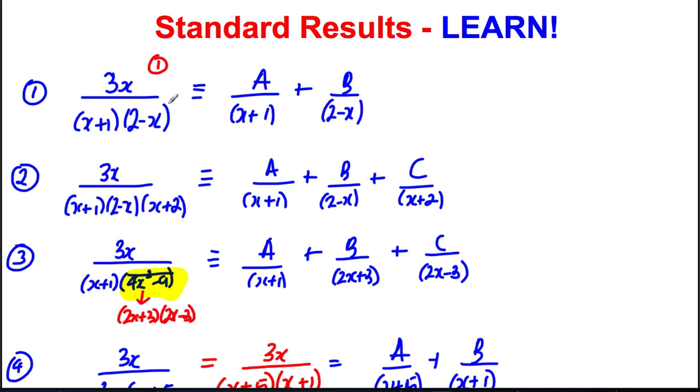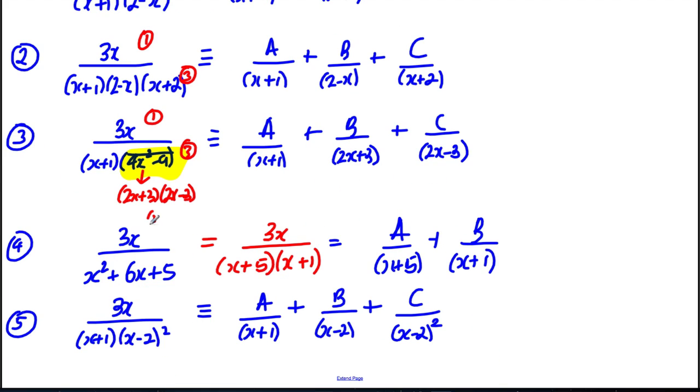Here, the order's 1 and 2, a linear and a quadratic. Here, it's 1 and 3, a linear and a cubic. Here, it's 1 and 3. Here, it's 1 and 2, and here, it's 1 and 3. What if the order of the top was bigger than the order of the bottom or equal to?